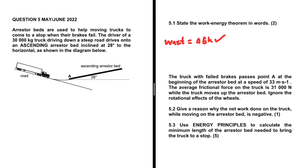Arrestor beds are used to help moving trucks come to a stop when their brakes fail. The driver of a 30,000 kg truck driving down a steep road drives onto an ascending arrestor bed inclined at 28 degrees to the horizontal, as shown in the diagram. The truck with failed brakes passes point A at the beginning of the arrestor bed at a speed of 33 meters per second. The average frictional force on the truck is 31,000 newtons while the truck moves up the arrestor bed.